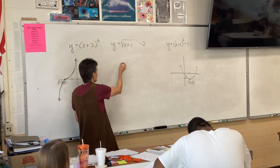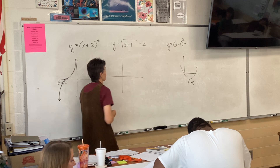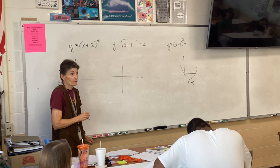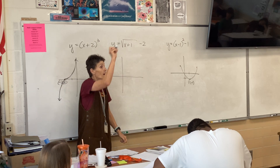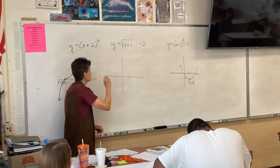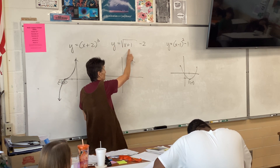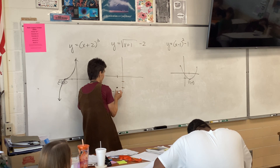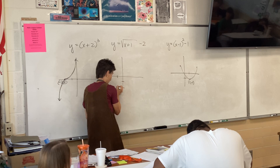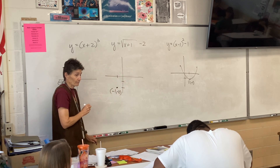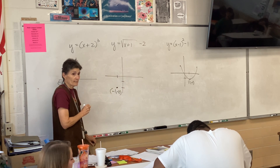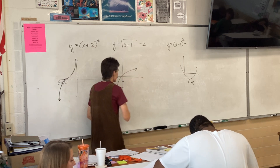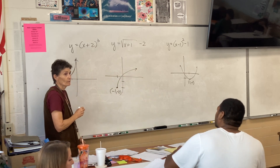What shape is this? Square root. A square root starts at the origin and goes up and out. How has this one been moved? Left 1, down 2. Remember to label your starting point, then draw up and out just like a regular square root.